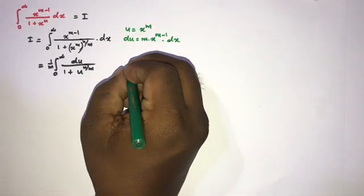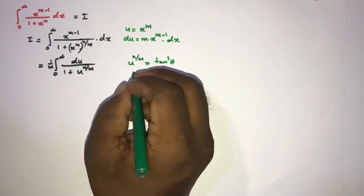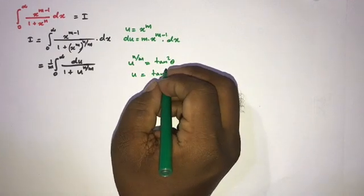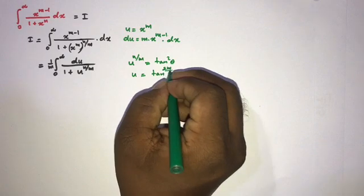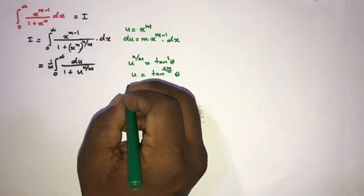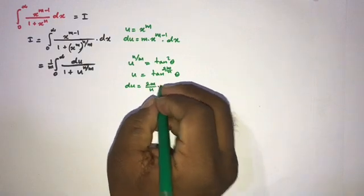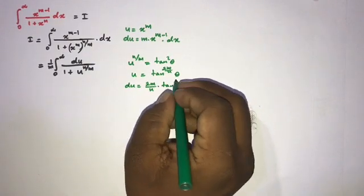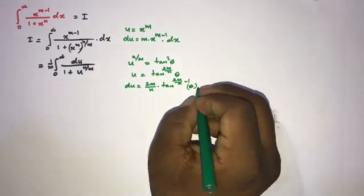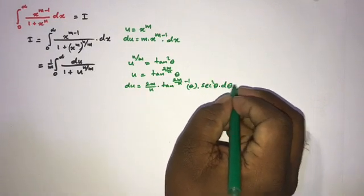To evaluate this integral, I take a second substitution: u to the n over m equal to tan squared theta. Isolating u gives u equal to tan raised to the 2m over n of theta. Differentiating, du equals 2m over n times tan to the 2m over n minus 1 of theta times secant squared theta d theta, by the chain rule.